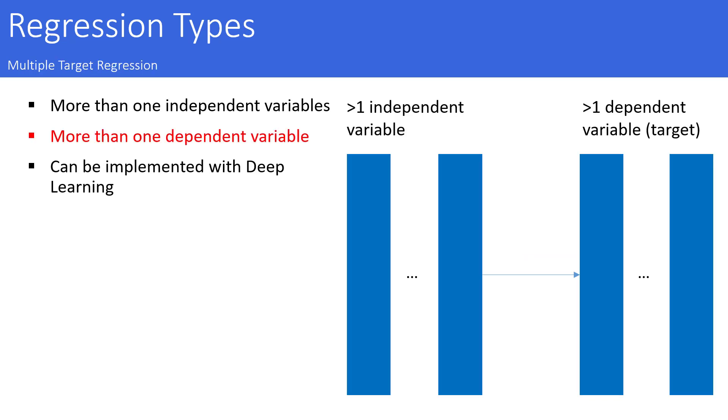A specialty is multi-target regression. In this case, you don't only have two or more independent variables, but also two or more target variables. You won't encounter this very often in real life, but it is useful to know that there are certain techniques for this to cover as well. It can be implemented, for example, quite easily with deep learning techniques.